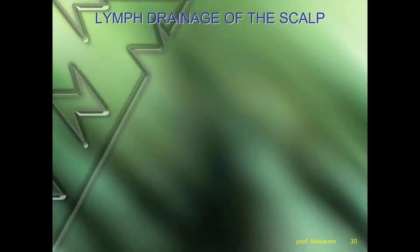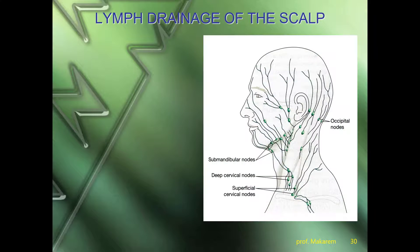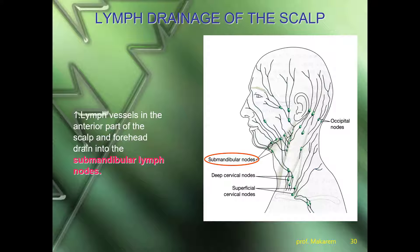Now, lymphatic drainage of the scalp: we have lymphatic vessels in the anterior part of the scalp and forehead, which drain into the submandibular lymph node. This is important — if we have any infection, tumor, or pathology in the anterior part of the scalp, we will see the submandibular lymph node enlarged.